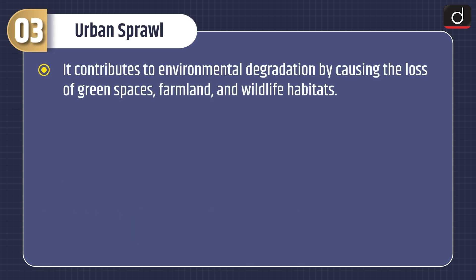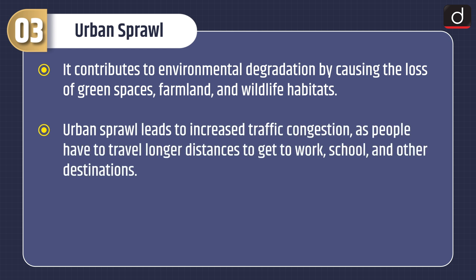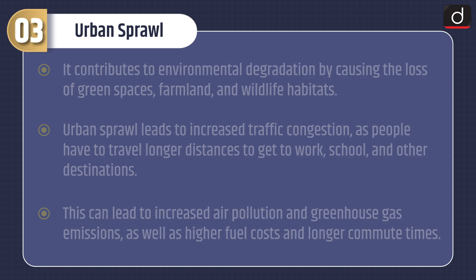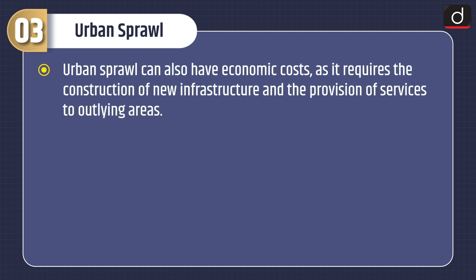Urban sprawl contributes to environmental degradation by causing the loss of green spaces, farmland, and wildlife habitats. It leads to increased traffic congestion as people have to travel longer distances to get to work, school, and other destinations. This can lead to increased air pollution and greenhouse gas emissions, as well as higher fuel costs and longer commute times. Urban sprawl can also have economic costs, as it requires the construction of new infrastructure and provision of services to outlying areas.